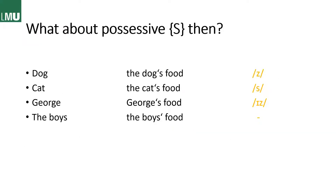And the possessive -s goes according to a very similar pattern. So we have 'dog's' — voiced g, voiced z. 'Cat's' — voiceless t and voiceless s, the same as before. Then we have 'George's' — with the affricate or sibilant at the end. And in the case of a plural word, we don't add an additional possessive -s, so we have no further marking.